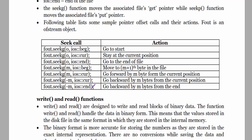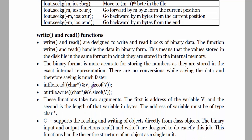The read() function is used for reading from a file and the write() function is used for writing to a file. These functions take two arguments: the first is the address of the variable v, and the second is the size or length of that variable in bytes. The address of the variable must be of type char, so we type cast it by writing (char*) before the address.